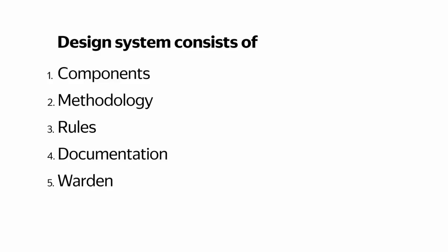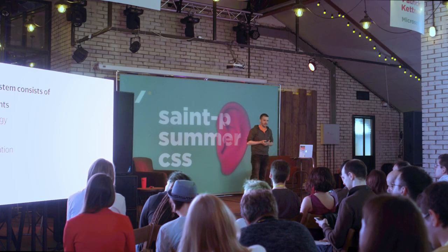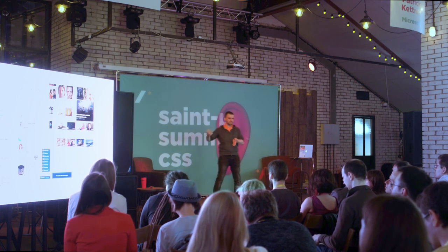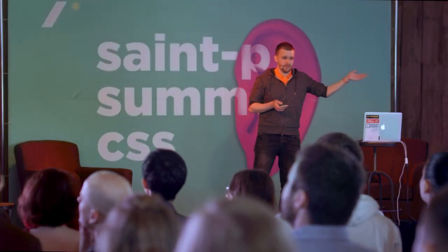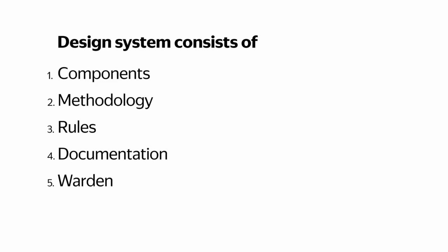Actually, a design system consists of several parts. The first part is components. Everyone knows about components — you just take your design, split it into chunks, call them components, and can reuse them every time in your product. But if you only have a bunch of components, it's not a design system. To sort out your components, you need some methodology.